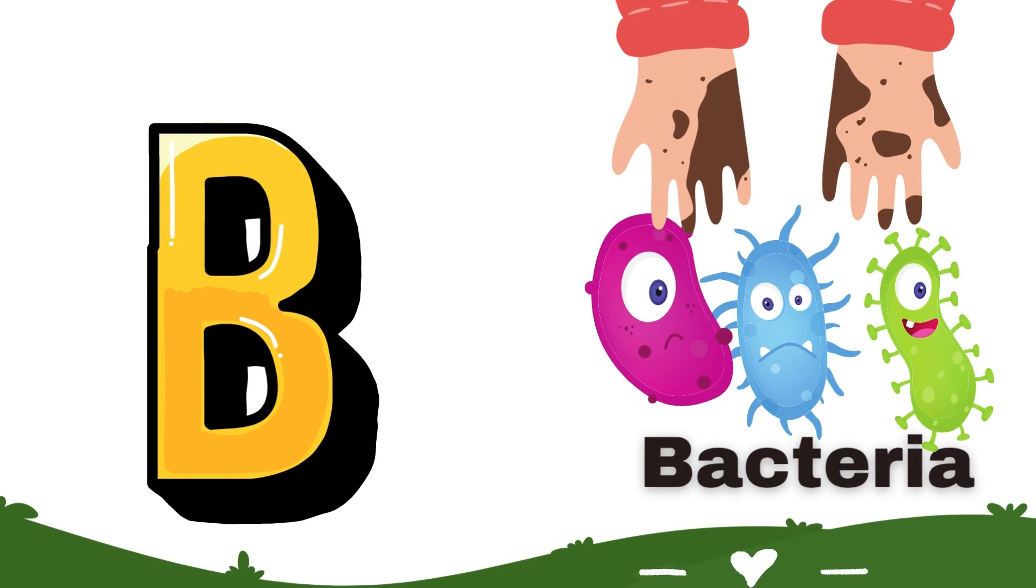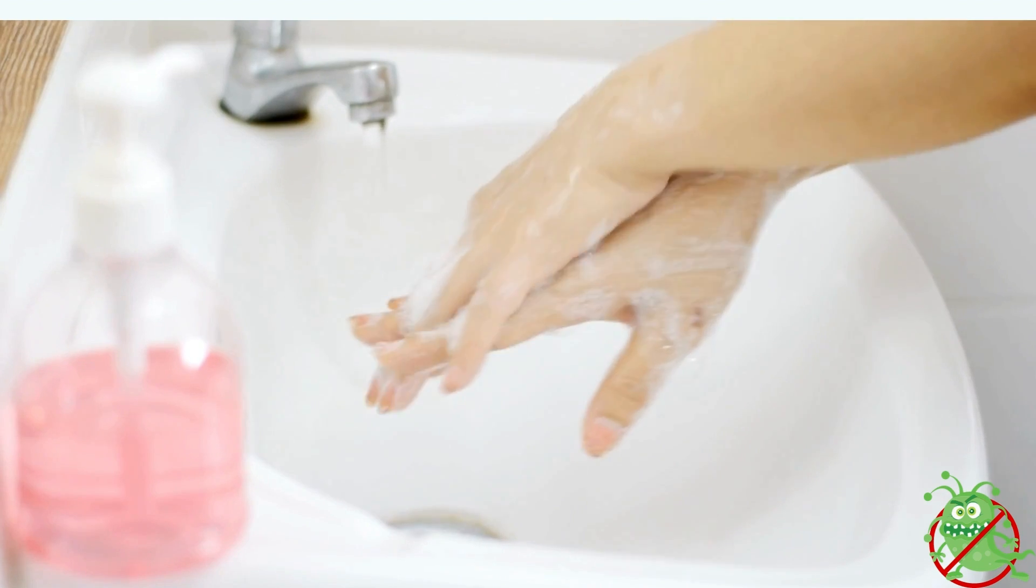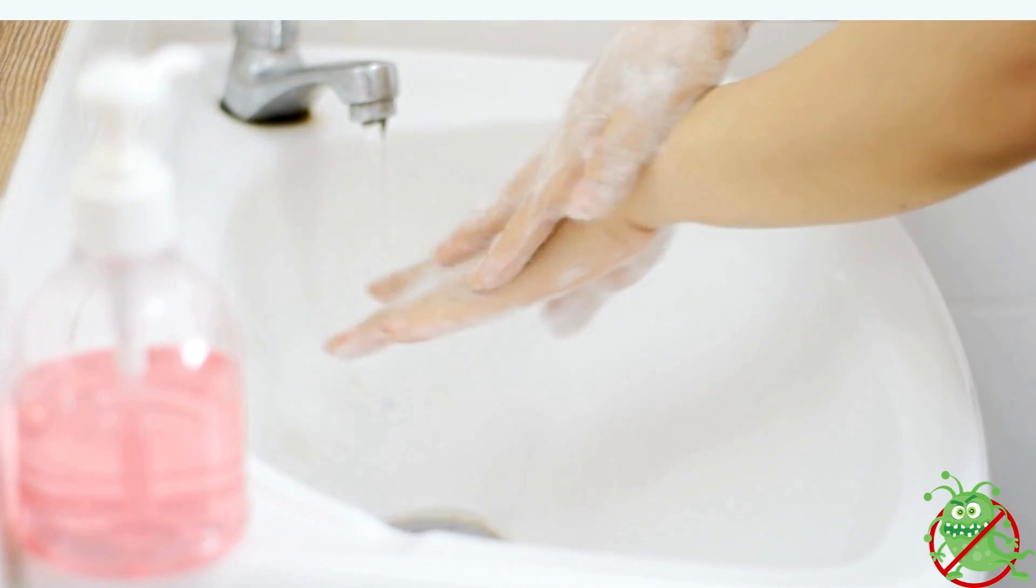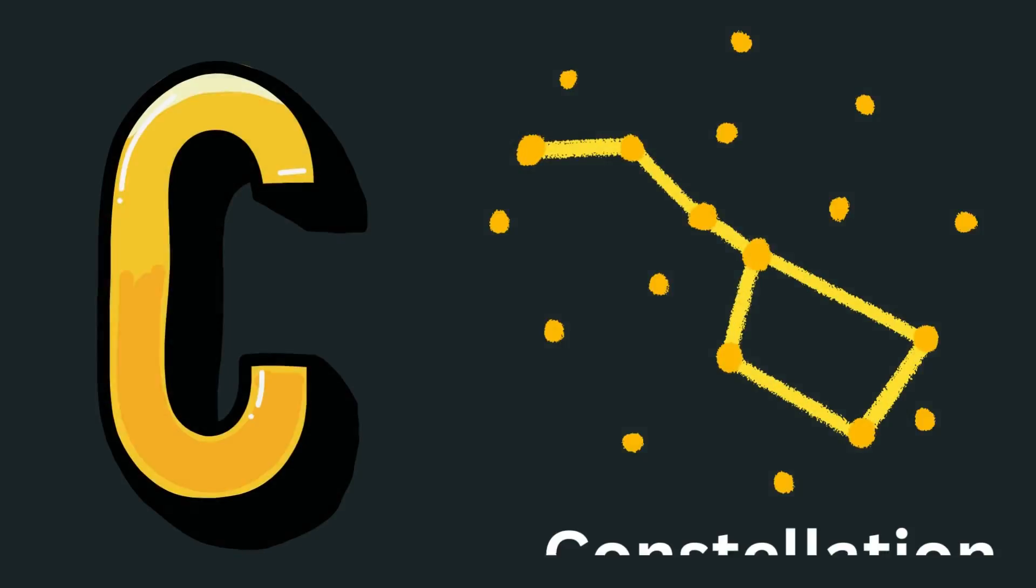B for Bacteria. Washing hands with soap and water keeps germs away, making us healthier every day. Scrubbing hands clean kills bacteria unseen, a simple habit that keeps us safe and keen.